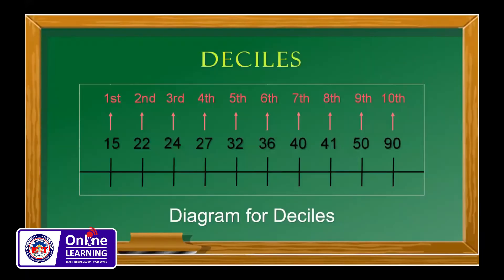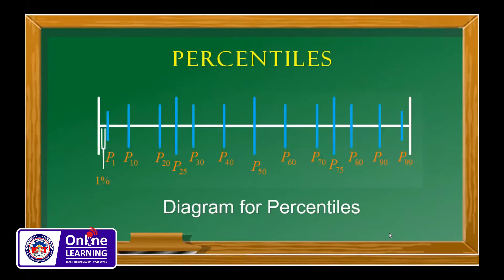Next is decile. When we say decile, it divides the data into 10 equal parts and each part has 10 percent. And last is the percentile, which has 100 equal parts and each part has 1 percent.